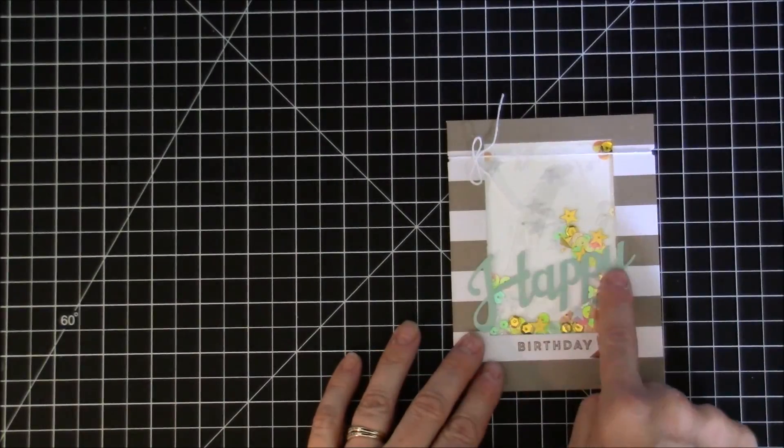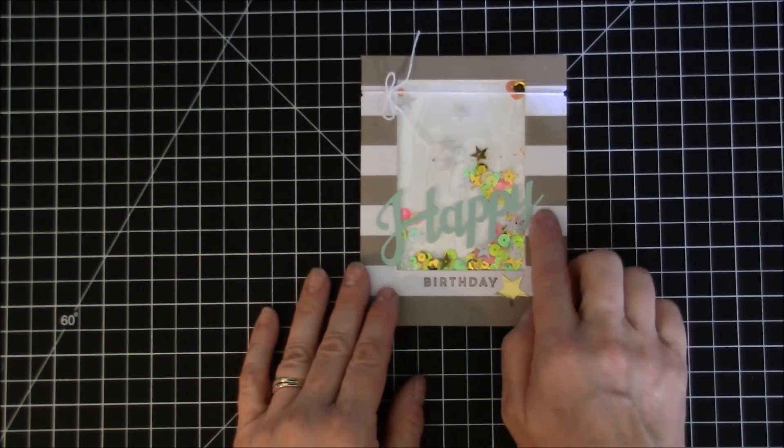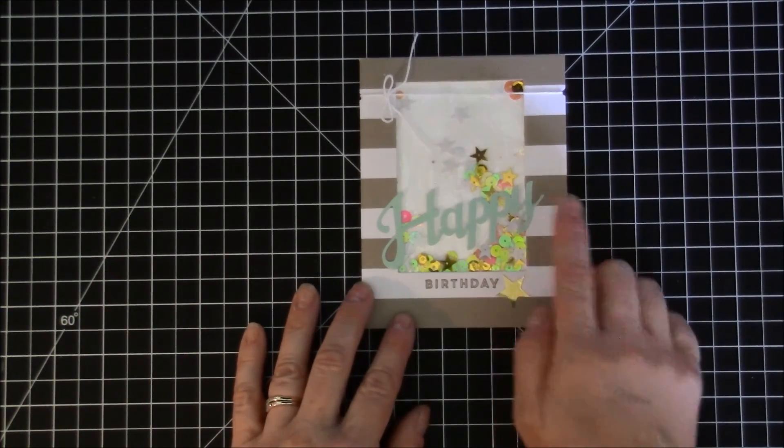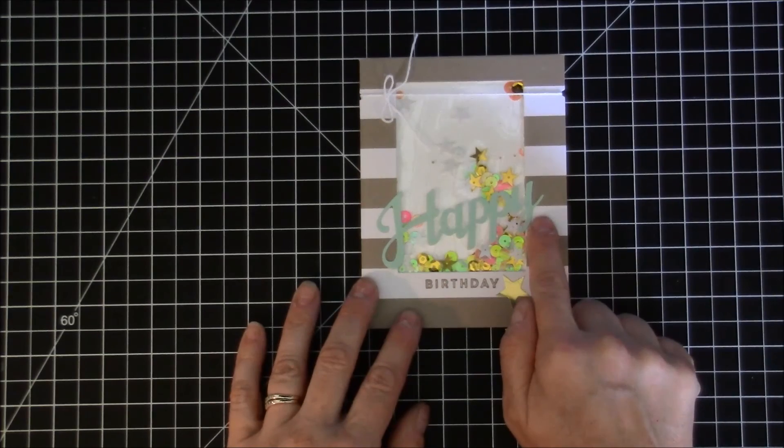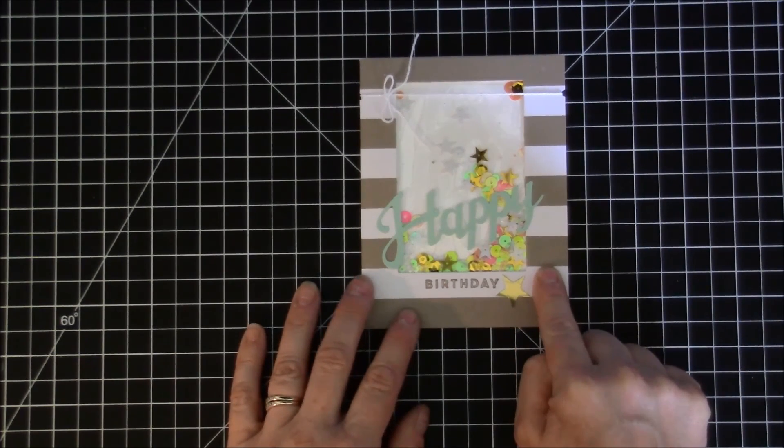Now this happy is from last month's paper pumpkin kit, but I happen to have some extra ones because I did different cards last month. I used it on here because I thought the mint macaron went perfect with this tip-top taupe color that's in there.